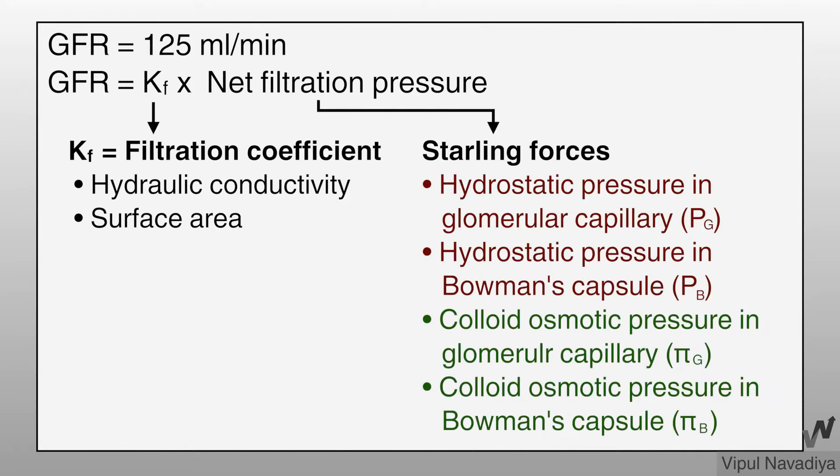Net filtration pressure is determined by Starling forces. These forces are hydrostatic pressure and colloid osmotic pressure in the glomerulus and in Bowman's capsule. Let's see each pressure one by one.